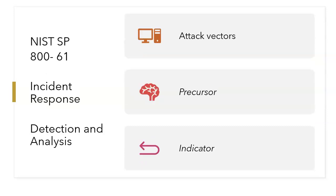The second phase is detection and analysis. An attack vector is a path or means by which an attacker can gain access to a network or server to deliver a payload or malicious outcome. Attack vectors exploit system vulnerabilities, including the human element. Examples include removable media, web, email, impersonation, improper usage, and loss or theft of equipment. Signs of an incident fall into two categories: precursors and indicators. A precursor is a sign that an incident may occur in the future, while an indicator is a sign that an incident may have occurred or is occurring now.